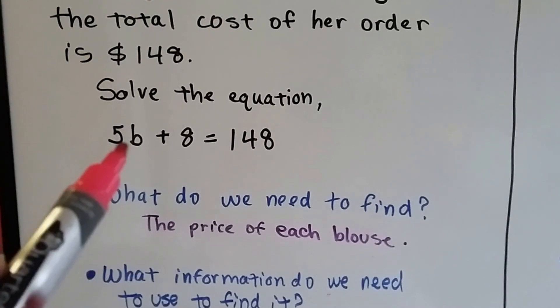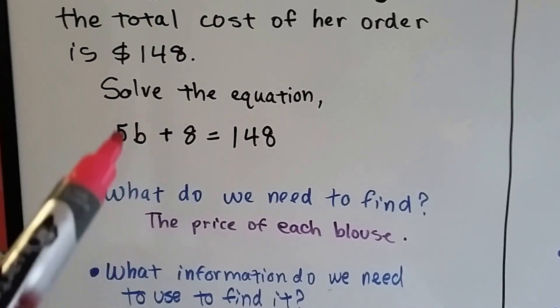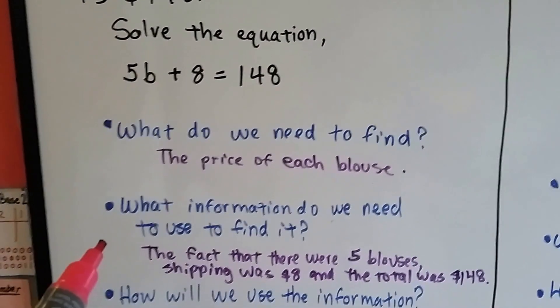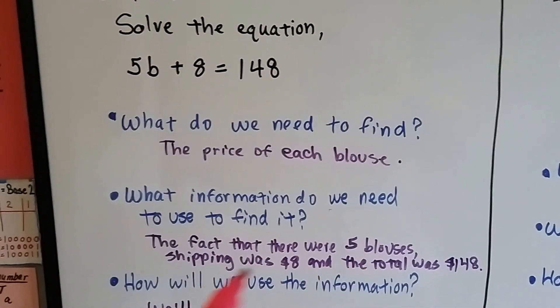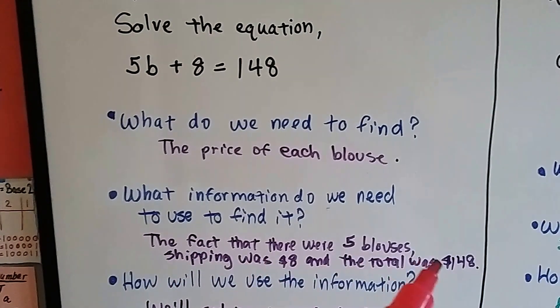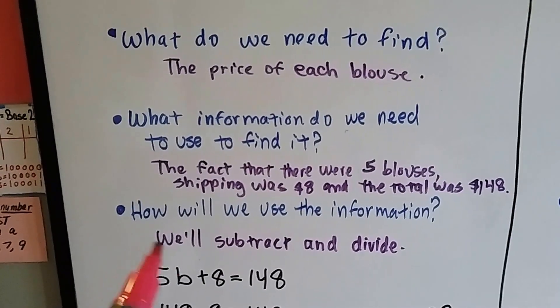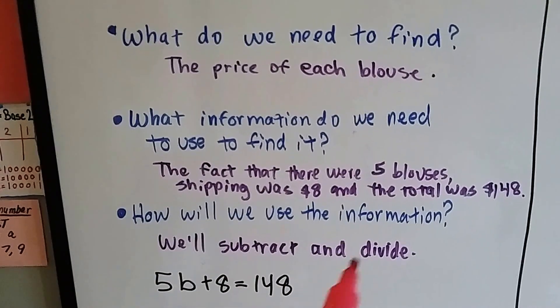So what do we need to find? 5B, we need to find B. B is the price of the blouses, each blouse. What information do we need to use to find it? The fact that there were 5 blouses, the shipping was 8, and the total was $148. We need all three of those. And how will we use the information? We're going to subtract and then divide.